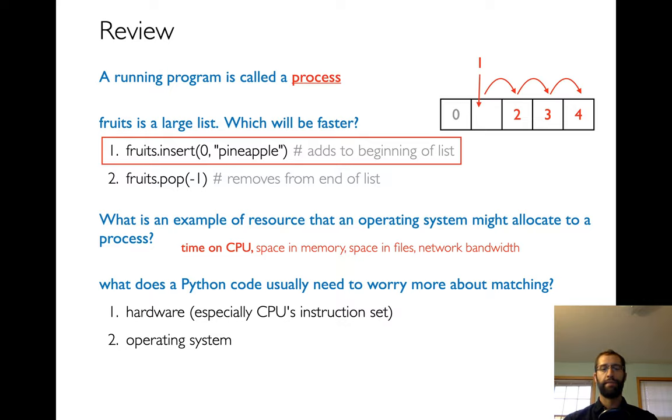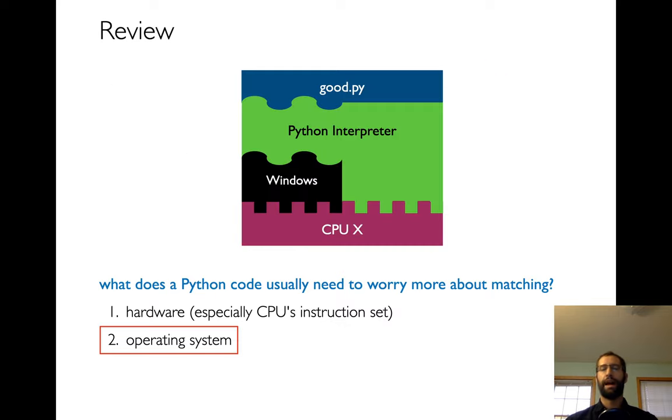The last one, which has to do with reproducibility. If we were writing some Python code, what do we have to worry more about matching? Do we have to worry about what hardware we're running on? And the main thing with hardware here is the CPU and its instruction set. Remember that the instruction set is this big table where we have all these operations in it and each operation has a number. So for example, maybe five means add, right? That's instructions that a CPU has. Maybe five means something else in a different CPU's instruction set. So that's the hardware. Another answer is the operating system. And the answer here, the correct answer is that we have to worry about matching the operating system.